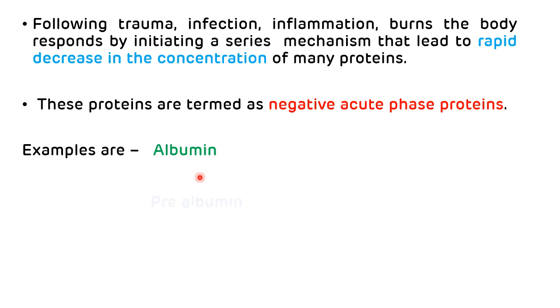Second negative acute phase protein is pre-albumin. Pre-albumin is also helping in the transport of thyroxine as well as vitamin A. And the third one is transferrin. Transferrin is the important transport protein for iron. These are examples of negative acute phase proteins.